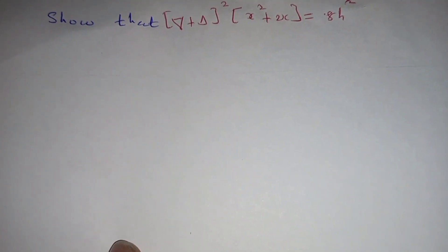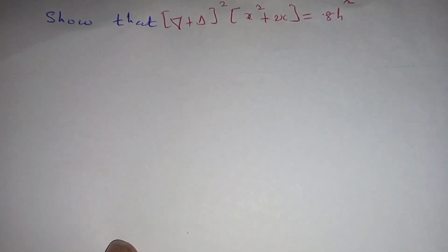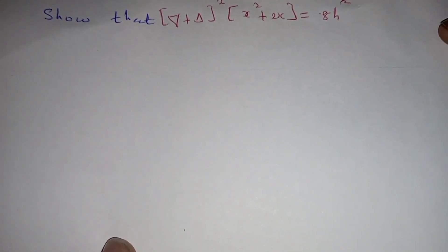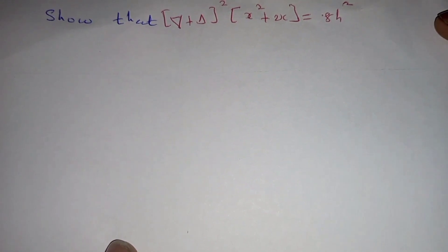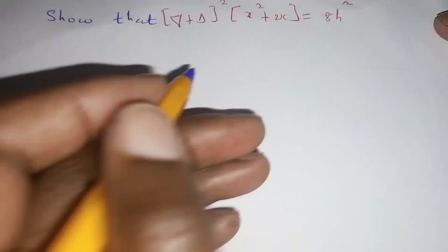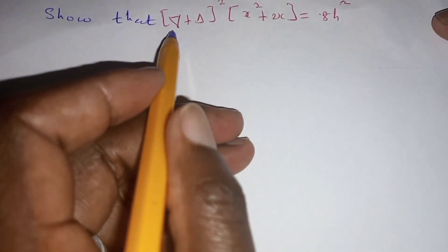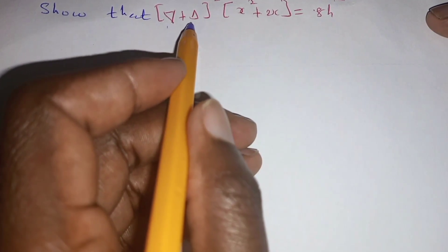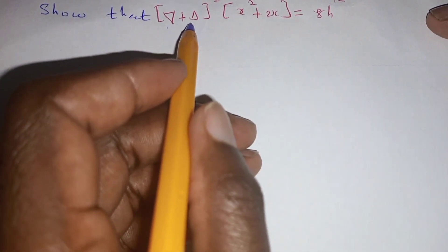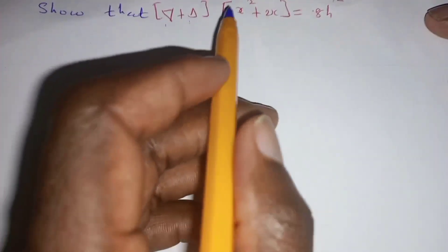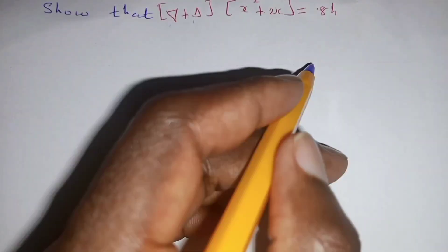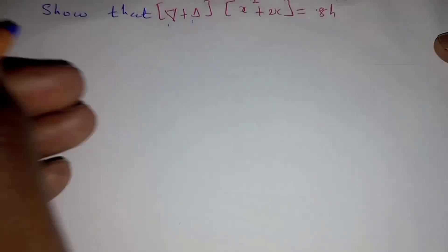Hello my fellow mathematician, welcome to the study of Numerical Analysis. Today we are going to show that when you are given backward difference plus one, the whole thing squared and submitted to x squared plus two x, the result is eight.